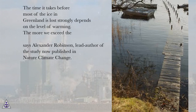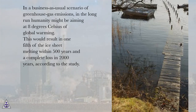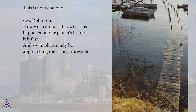The time it takes before most of the ice in Greenland is lost strongly depends on the level of warming. The more we exceed the threshold, the faster it melts, says Alexander Robinson, lead author of the study published in Nature Climate Change. In a business-as-usual scenario of greenhouse gas emissions, in the long run humanity might be aiming at 8 degrees Celsius of global warming. This would result in one-fifth of the ice sheet melting within 500 years and a complete loss in 2,000 years, according to the study. This is not what one would call a rapid collapse, says Robinson.